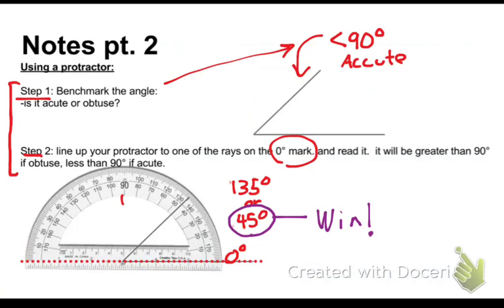Now why does it give both? Well, this protractor is measuring two angles. It is measuring this angle right here, the one we have lined up to this zero mark. It is also measuring at the same time this angle here lined up to the second zero mark.